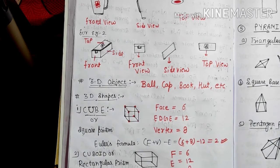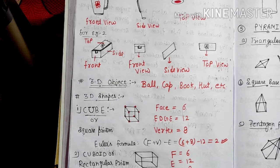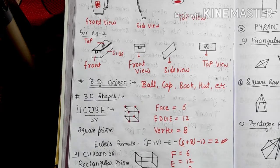Do you know what face, edge, and vertex are? The definition of face: the flat surface of any object is called a face. And what is an edge? Where two or more surfaces meet together, that line is called an edge.